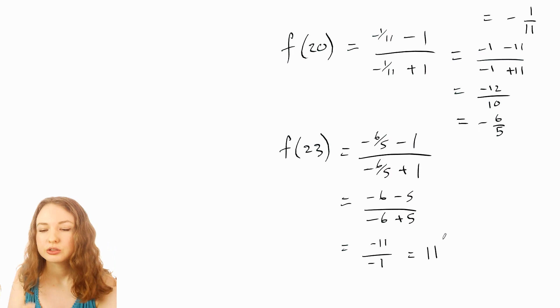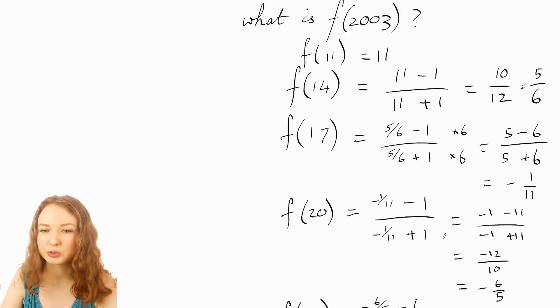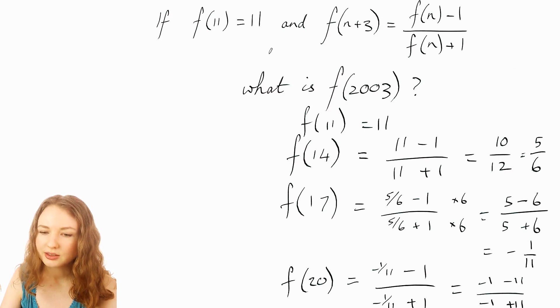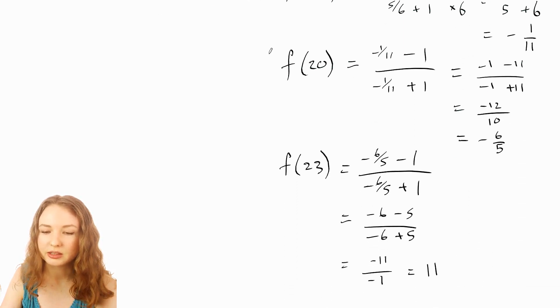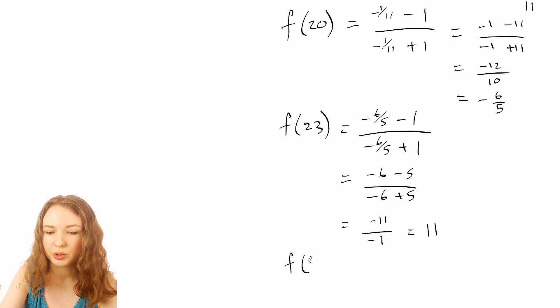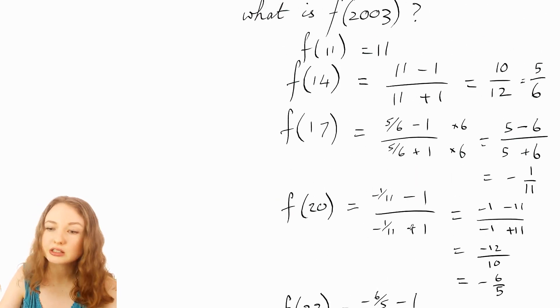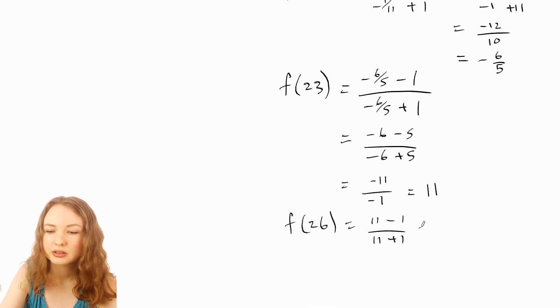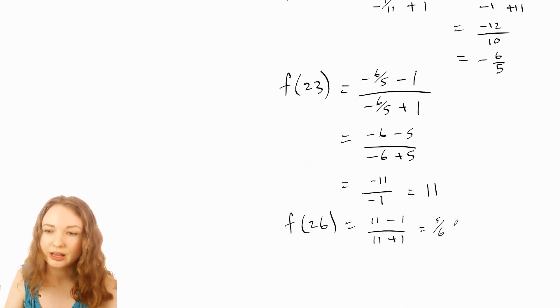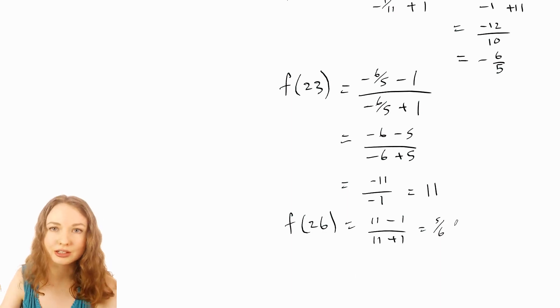So we've come back to what f of 11 was. We started out with 11 and that will mean that the next one in the sequence, the f of 26, well that's just 11 minus 1 over 11 plus 1 again just like we had for f of 14. So that's going to be 5 over 6 and then the next one's going to be negative 1 over 11 and then the next one's going to be negative 6 over 5 and so on. It's going to just repeat itself.